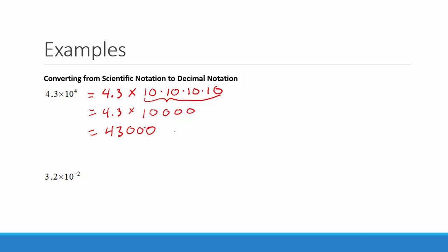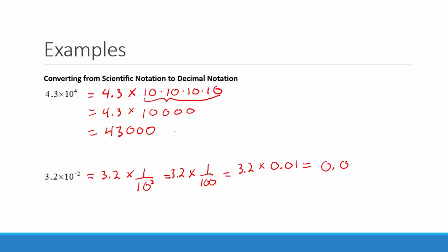Now let's look at 3.2 times 10 to the negative 2. We can rewrite that as 3.2, and we know that 10 to the negative 2 is equal to 1 over 10 squared, and 1 over 10 squared is equal to 1 over 100. We also know that 1 over 100 can be written as 0.01, and when we multiply 3.2 times 0.01 we get 0.032.